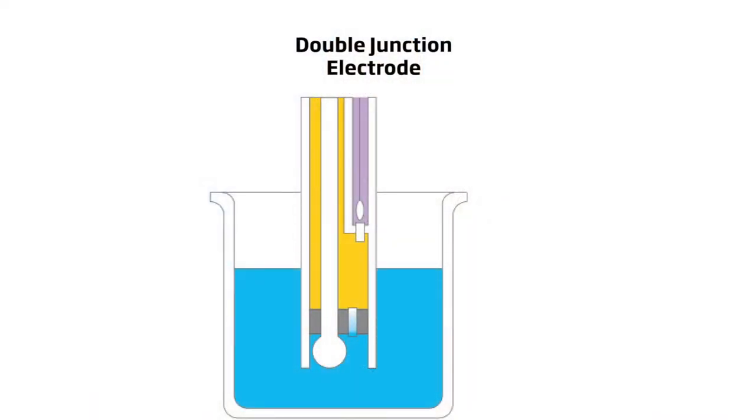In double junction electrodes, there are two separate chambers, one of which contains silver chloride and the other that does not.